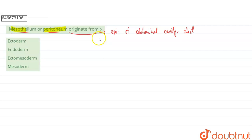Ectoderm is the outer germinal layer, and this outer germinal layer can give rise to the skin.